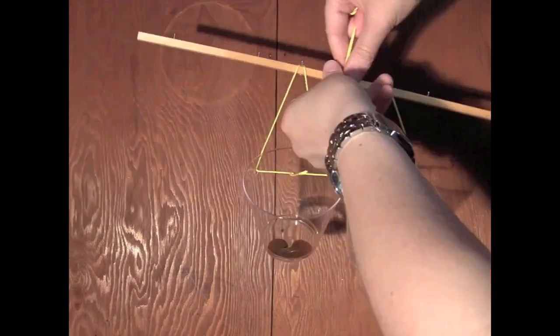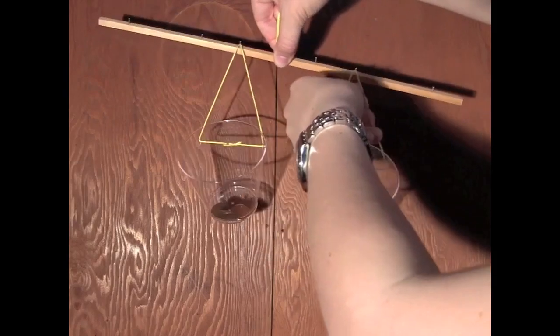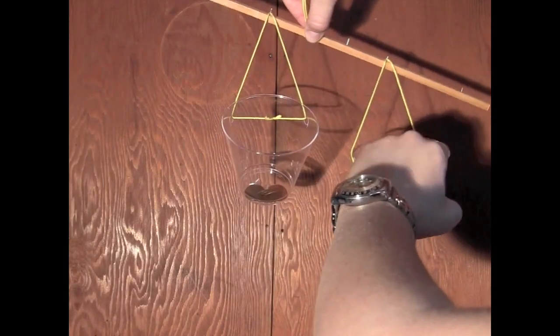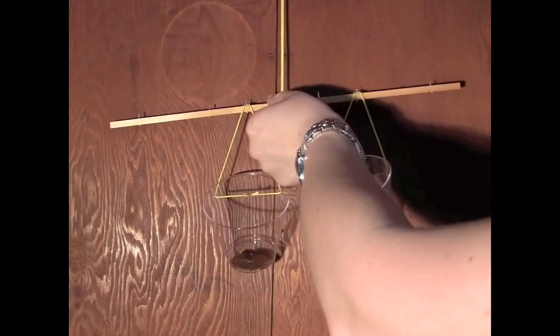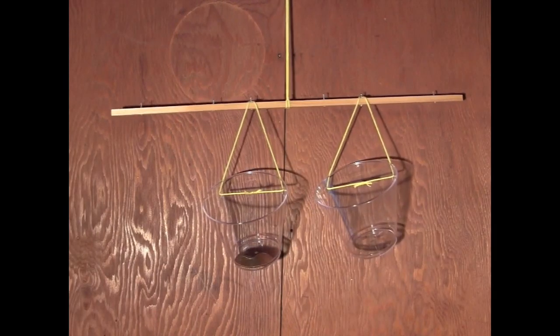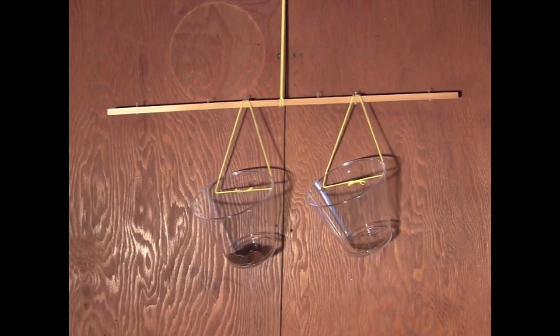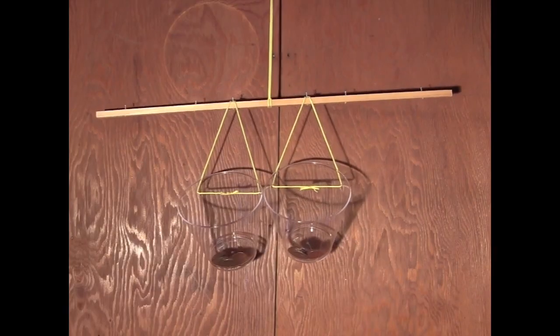But there's another way of doing this. I could have left the right-hand cup at the old position and just taken out some of its weight. This also balances. So we've found two different ways of balancing the same thing. We can either change the weight or change the distance.